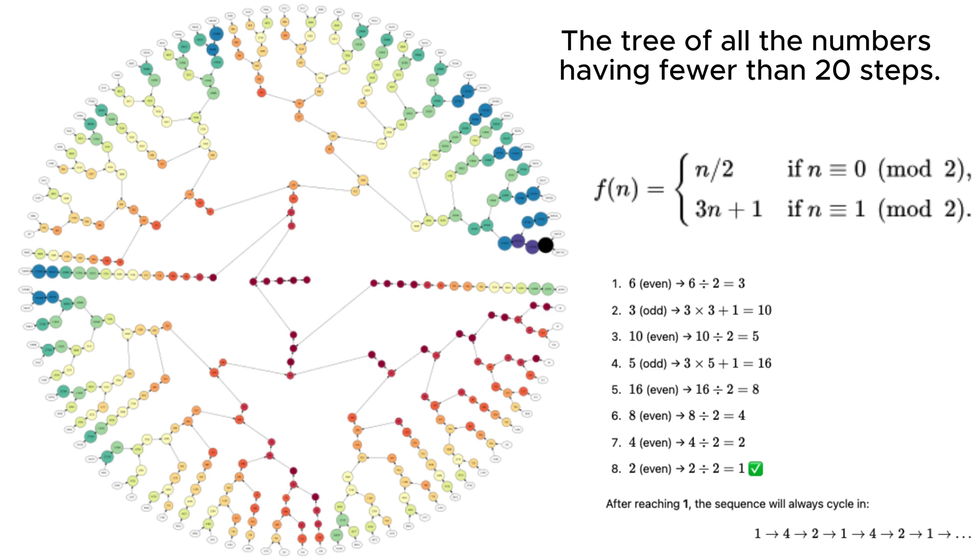The rules are basic. Take any positive integer n, and if it is even, divide it by 2. If it is odd, multiply it by 3 and add 1. Repeat this process, and the conjecture claims that no matter what number you start with, you will always eventually reach the number 1.